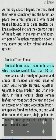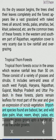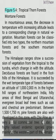Tropical thorn forests occur in areas which receive rainfall less than 50 cm. These consist of a variety of grasses and shrubs. It includes semi-arid areas of southwest Punjab, Haryana, Rajasthan, Gujarat, Madhya Pradesh and Uttar Pradesh. In these forests, plants remain leafless for most part of the year and give an appearance of scrub vegetation. Important species found are Babul, Ber, Wild Date Palm, Khair, Neem, Khejri, Palas, etc. Tussocky grass grows up to a height of 2 meters as the undergrowth.